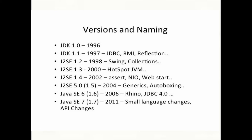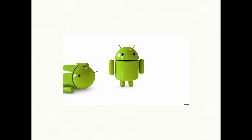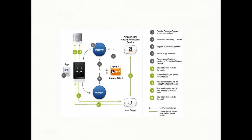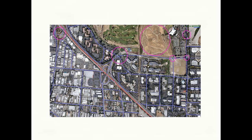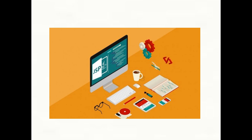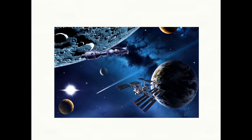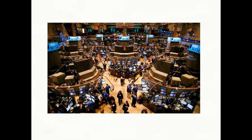JDK 1.0 was released on January 23, 1996. Today Java is used in real-world applications including Android apps, server apps in the financial services industry, Java web applications, software tools, trading applications, J2ME apps, embedded space, big data technologies, high frequency trading, and scientific applications.